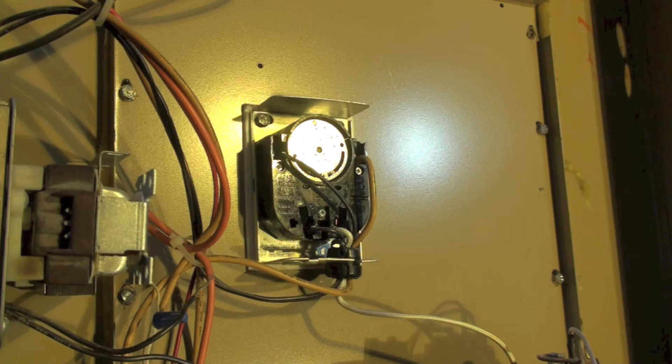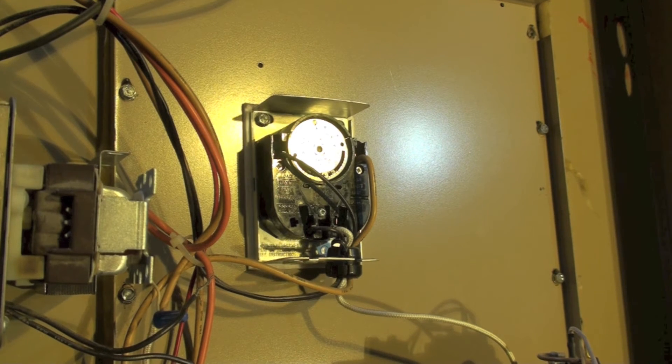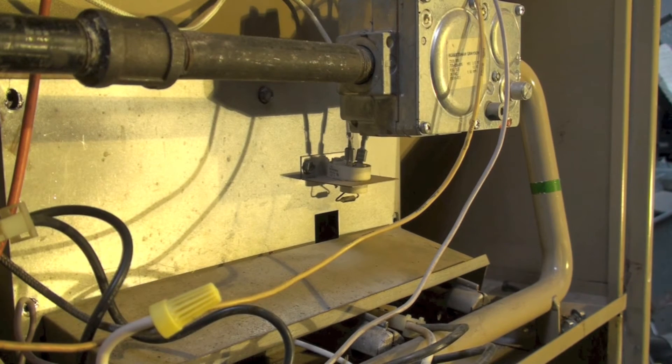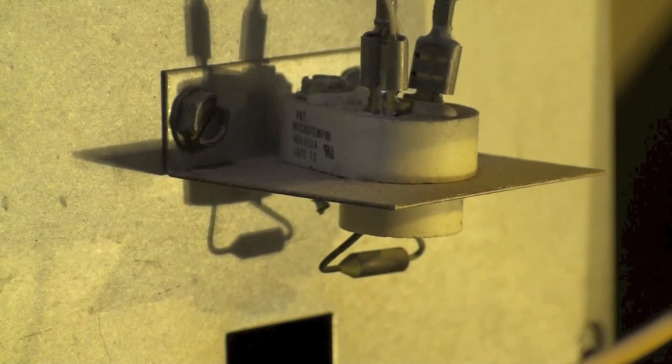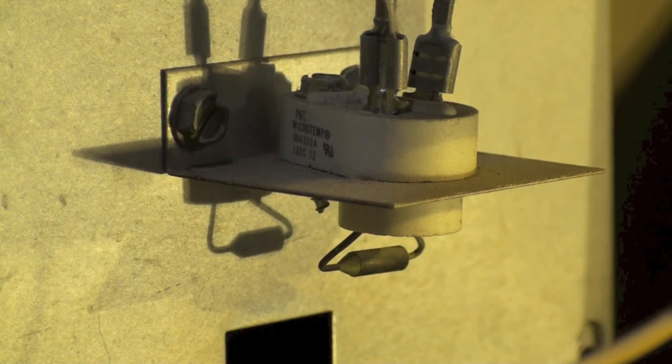Now there's one other type of limit on this furnace we're going to show you next. This next one is a rollout switch. It's right there in the center, right there.